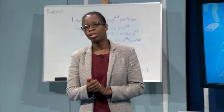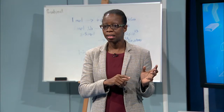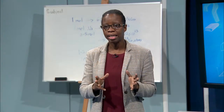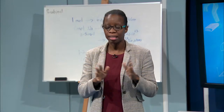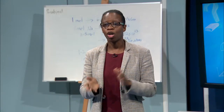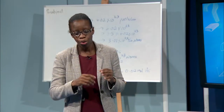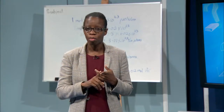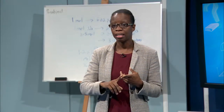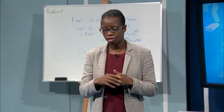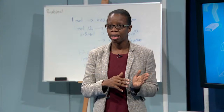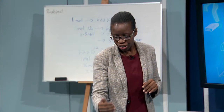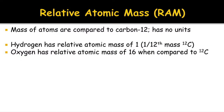We talk about relative atomic mass. We compare masses to the carbon atom because it is stable and is the basis for comparison. When we compare masses to carbon, we use the term relative atomic mass — the mass of one atom of that element compared to one twelfth the mass of carbon-12. Because it is a relative measurement, it has no units. For example, hydrogen has a relative atomic mass of 1 and oxygen has a relative atomic mass of 16.